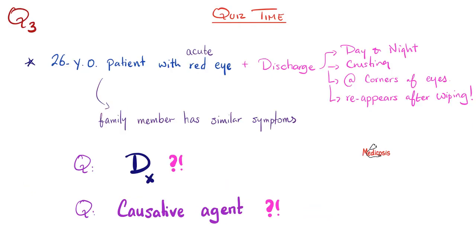Quiz time. You have a 26-year-old patient with acute red eye. There is discharge day and night, leaving crusting on the eyes, especially at the corners, and after wiping it reappears. Family members have similar symptoms. What's the diagnosis, and what is the causative agent? Let me know the answers in the comments — you'll find the correct answer in the next video.